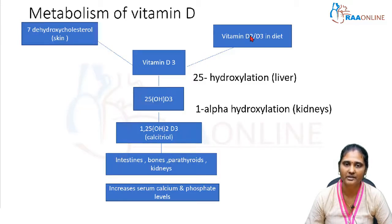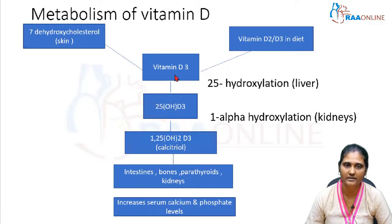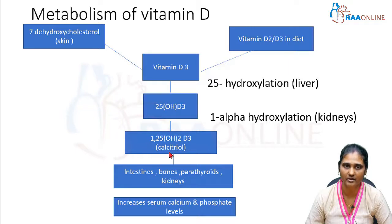Vitamin D2 and D3 from the diet, and 7-dehydrocholesterol from the skin, are converted to vitamin D3 (cholecalciferol). This vitamin D3, by the action of 25-hydroxylase in the liver, is converted into 25-hydroxycholecalciferol (calcidiol). This calcidiol, by the action of 1-alpha hydroxylase in the kidneys, is converted into 1,25-dihydroxycholecalciferol, called calcitriol — the active form of vitamin D3.